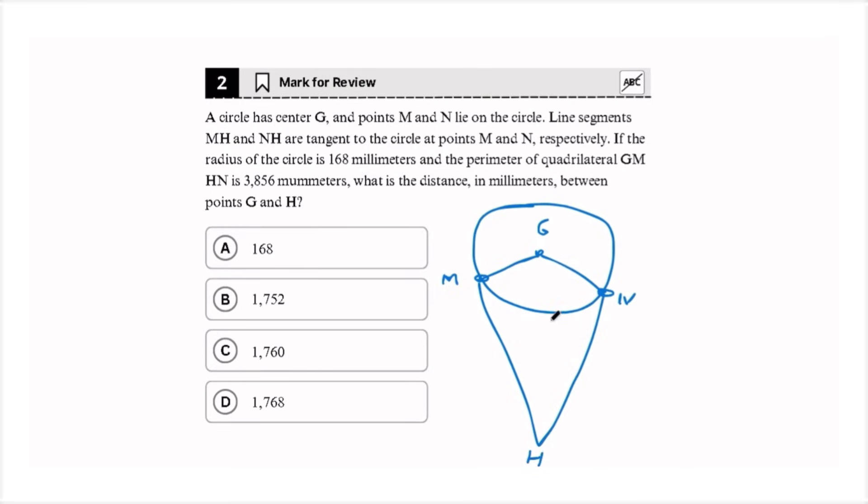So first, gm and gn are equal because they're both radiuses of the circle. And mh and nh are also equal. Since they are tangent lines, we know that they are perpendicular to the radius lines. So we know that they make two right triangles. So to find x, we know the perimeter, which is 3856, and we know the radius. So we do 2 times the radius plus 2 times x. And we find that x is equal to 1760.